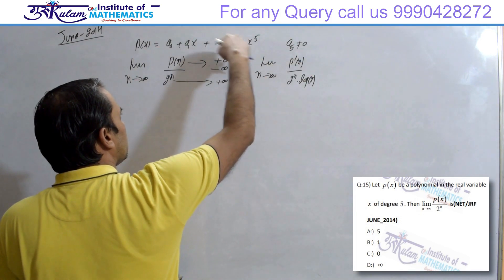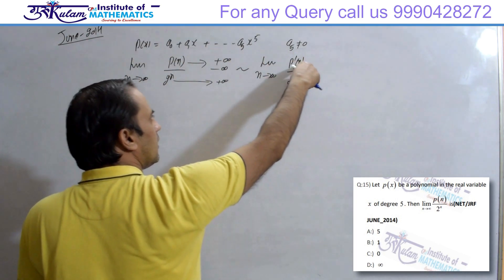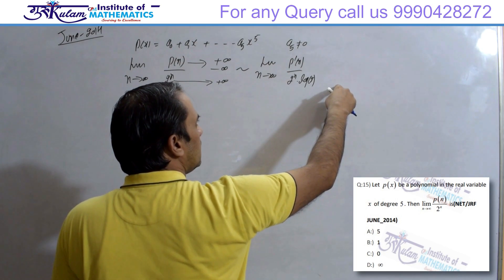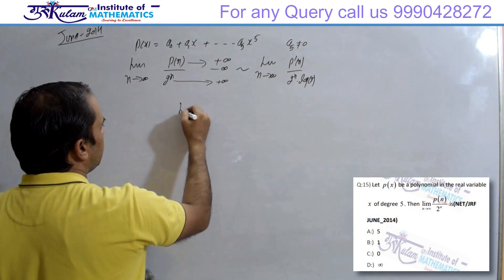अब इसका अगर derivative करेंगे, तो अभी 5 degree का polynomial है, 1 time derivative करेंगे 4 degree का. अगें ये infinity by infinity type का बनेगा. फिर derivative करेंगे. तो 5 time derivative करोगे, तो ये basically equivalent to आएगा, limit N tends to infinity,